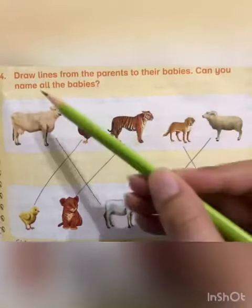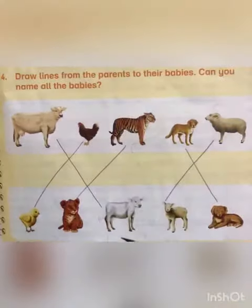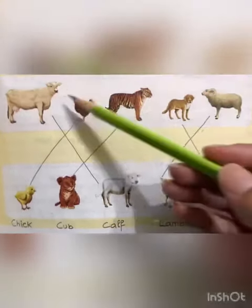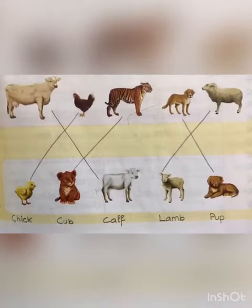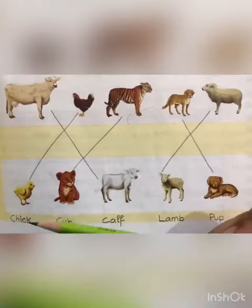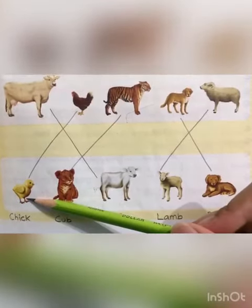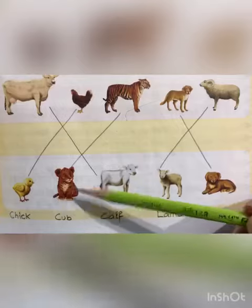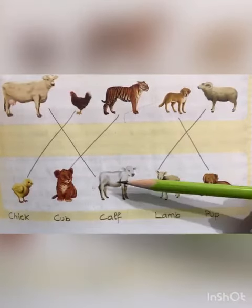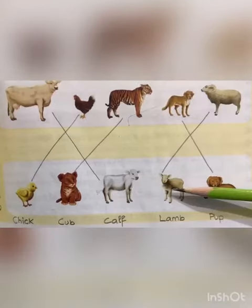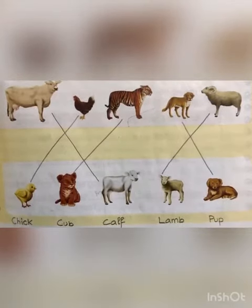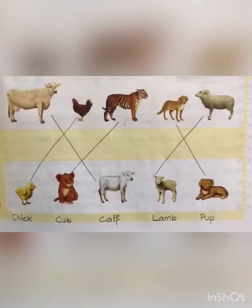Can you name all the babies? In this question we have to identify and mark a line between parents and their babies. Before marking lines, let's read out the names of the babies. Baby of a chicken is called a chick. Baby of a tiger is called a cub. Baby of a cow is called a calf. Baby of a sheep is called a lamb. Baby of a dog is called a pup.